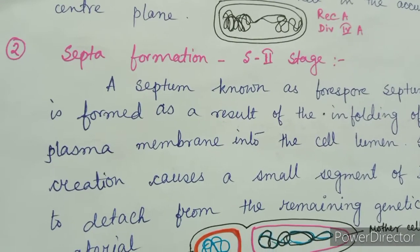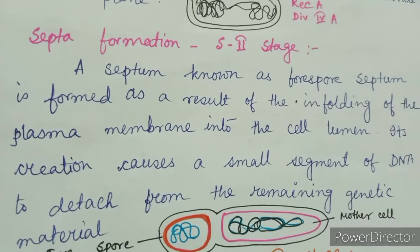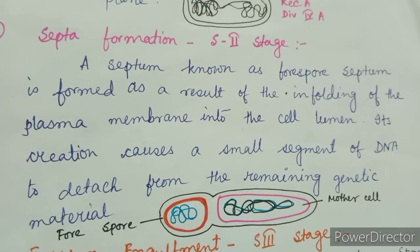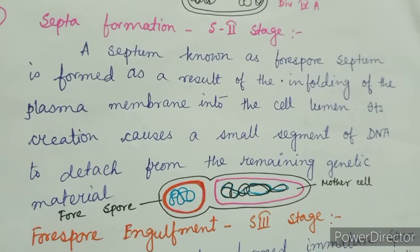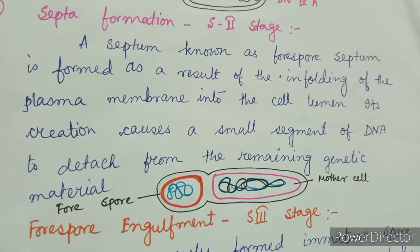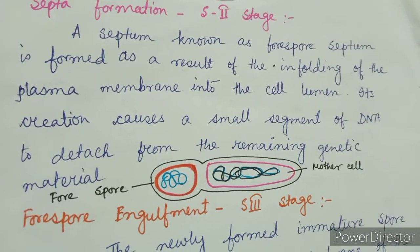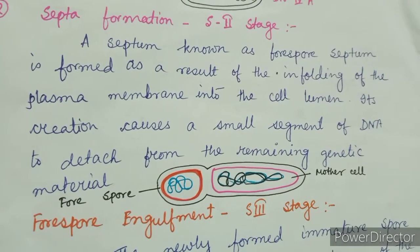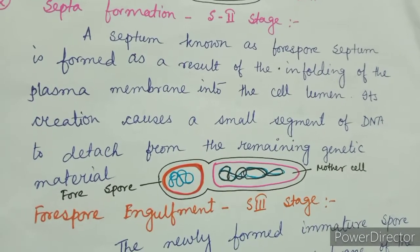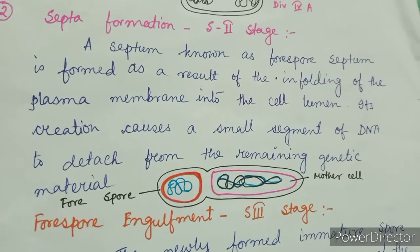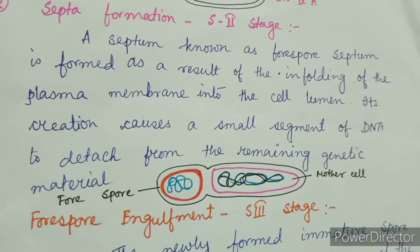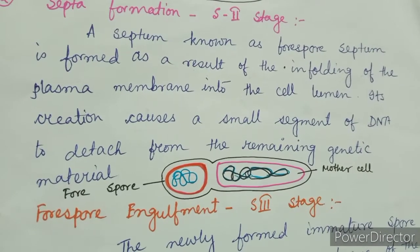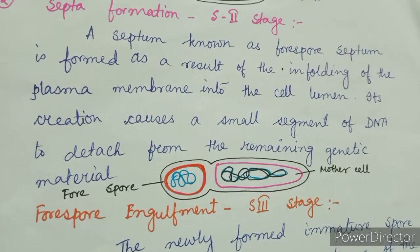The second stage is septum formation, Stage 2. A septum known as the forespore septum is formed as a result of infolding of the plasma membrane into the cell lumen. Its creation causes a small segment of DNA to detach from the remaining genetic material. The bacterial cell is divided into two parts: the smaller part is known as the forespore and the larger part is the mother cell.